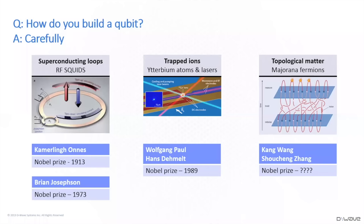A lot of people, when they hear about this, will say, what is a qubit? Is it just a spinning atom? And the real answer is, a qubit is not a particular physical thing in nature. A qubit is a mathematical model. In the physics world, anything that vibrates classically we can think of as being like a simple harmonic oscillator.